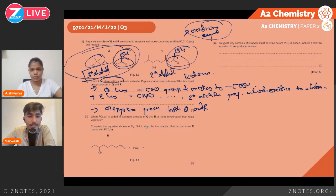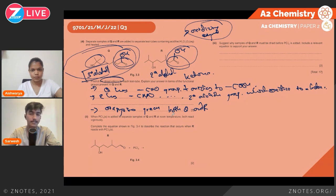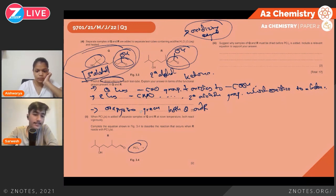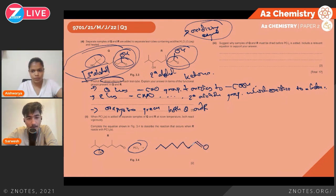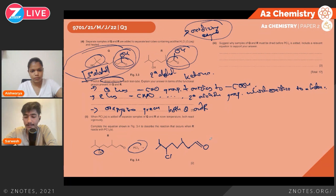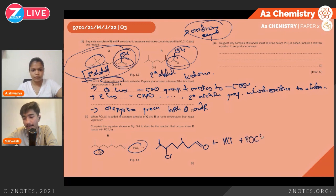When PCl5 solid is added to R, it replaces the OH group with Cl. The OH group in R becomes a C–Cl group, and the other products of the reaction are HCl and POCl3.